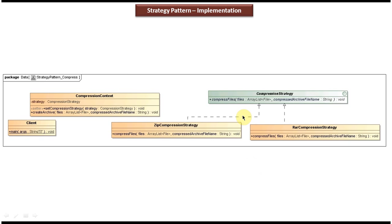This is the class diagram of the scenario which you have just seen. Here you can see a compression strategy - this is an interface and it has an abstract method compress files. It accepts two parameters. The first parameter is the list of files you want to archive, and the second parameter is the name of the archive file. This interface is implemented by two concrete classes: the first one is ZIP compression strategy and the second one is RAR compression strategy.